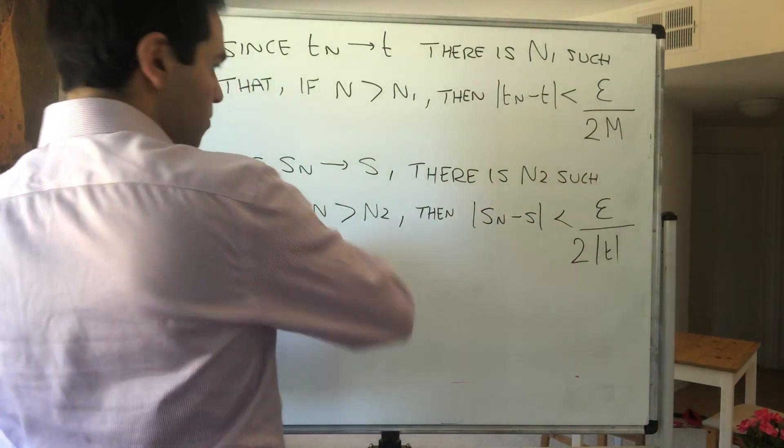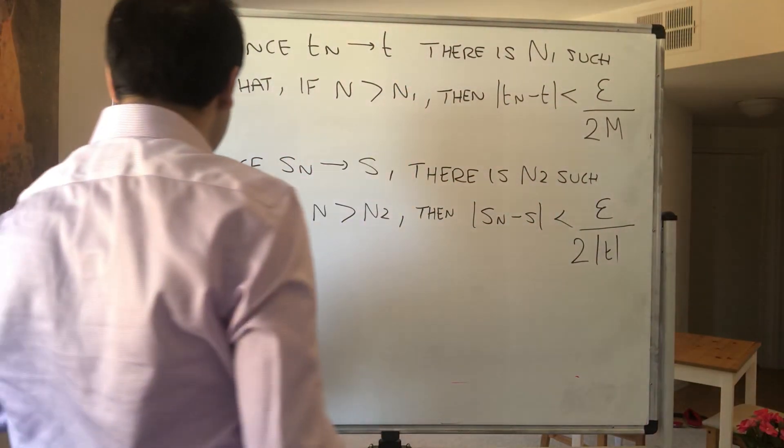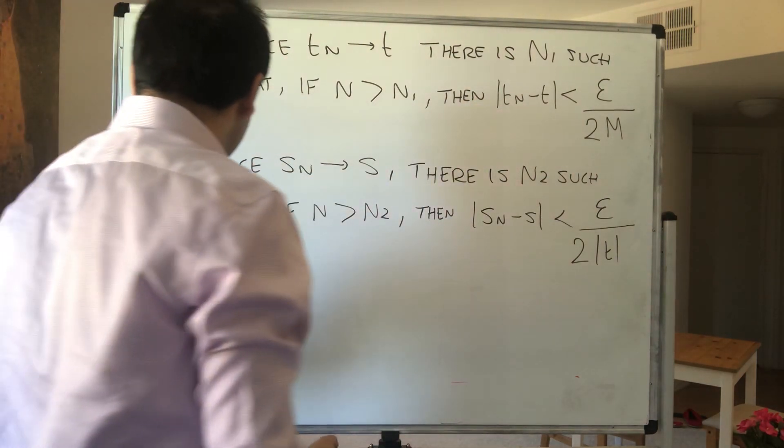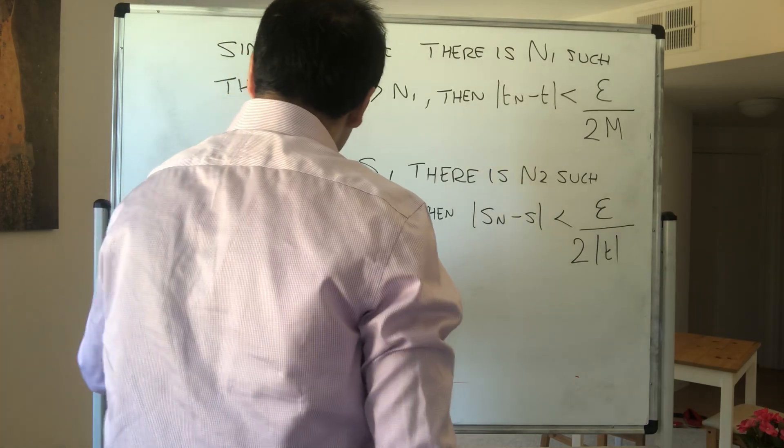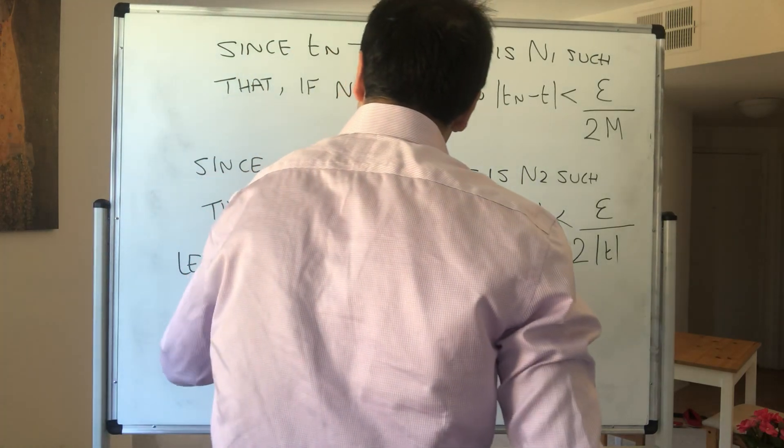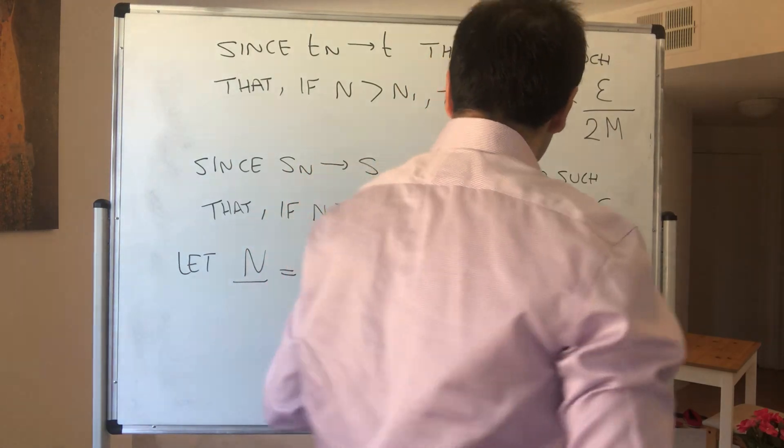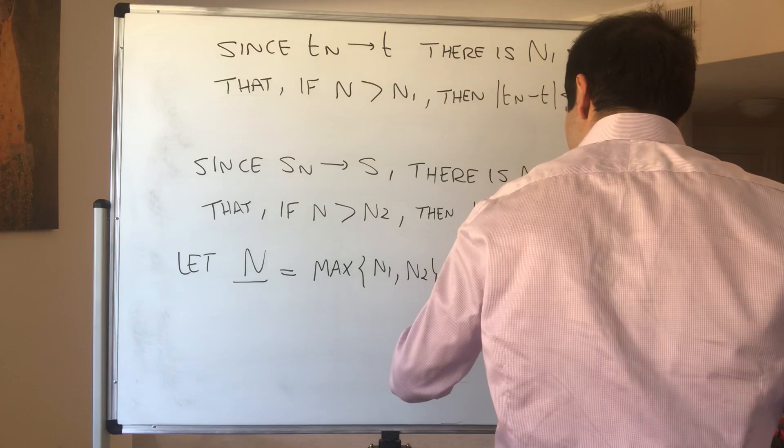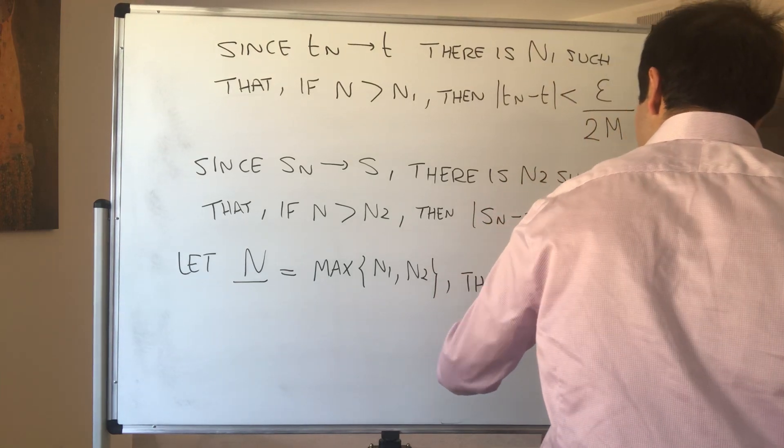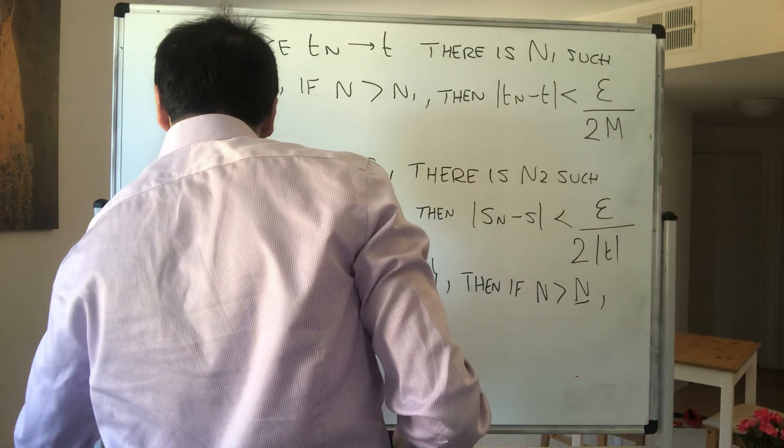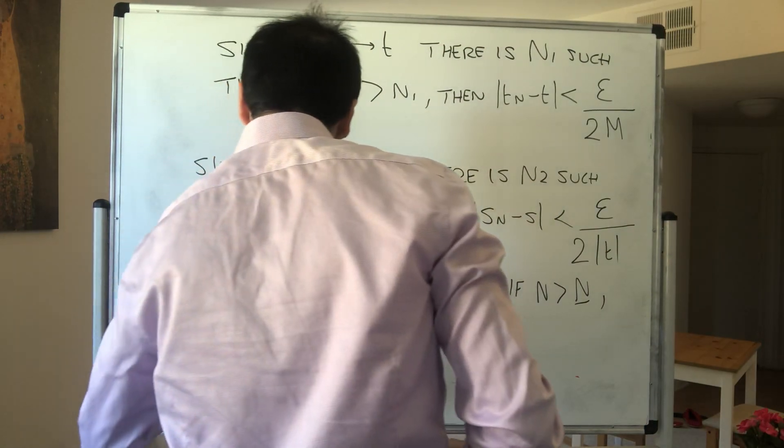And then let's just choose the bigger one of N1 and N2, because we want both things to happen. So let N be the maximum of N1 and N2. Then, if you're bigger than N, we have, well remember, the whole calculation is still true.